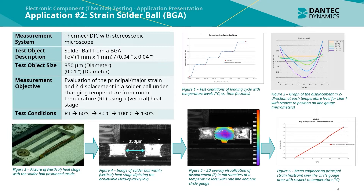In Figure 6 we can see the mean engineering principal or major strain given in millistrain over the circle gauge area with respect to temperature. A best fit linear trend line is then plotted to determine the relationship between principal strain and temperature.